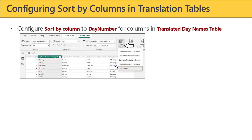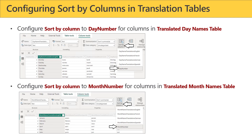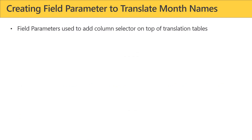Now that the translation tables are in place, the next step is to go to the translated day names table and configure sort by columns. When you show calendar days, you don't want the day name sorted alphabetically — you want it sorted chronologically. So taking each of those columns and setting the sort by column to day number is very important. Likewise, in the translated month names table, we take all those translation columns and set their sort by column to month number.